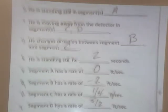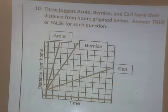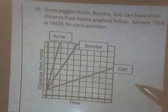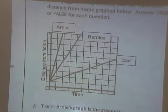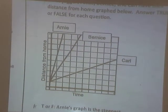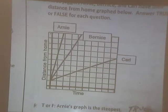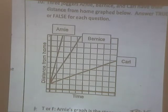All right, number ten. True and false. Three joggers. Arnie, Bernice, and Carl have their distance from home graphed below. Distance from home. So the higher the graph, the farther they are away from home. Answer true or false for each question. True or false? Arnie's graph is the steepest. True? True. Yeah. So steepest going up? Yeah, the steepest would be straight up and down. Yeah.